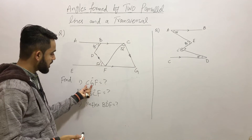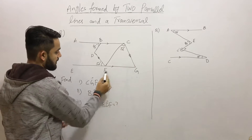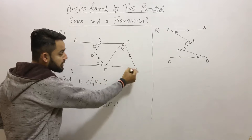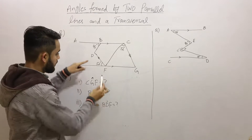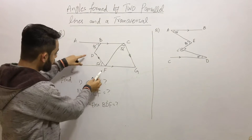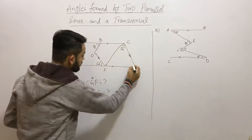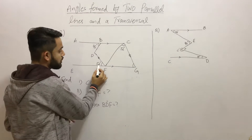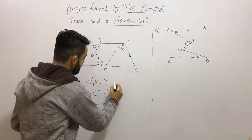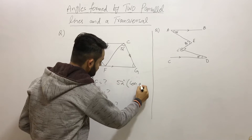Several angles are given, and we need to find angle CGF. Looking at the diagram, the mark at G shows us which angle we need to find. Since lines DF and CG are parallel, their corresponding angles are equal. Therefore, angle CGF equals 52 degrees by the definition of corresponding angles.